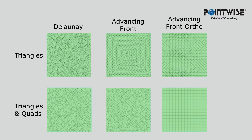PointWise includes three algorithms for producing surface grids: Delaunay, Advancing Front, and new in PointWise version 18, the Advancing Front Ortho algorithm. For each of these algorithms, you can choose to use only triangular cells or a mix of triangles and quads.